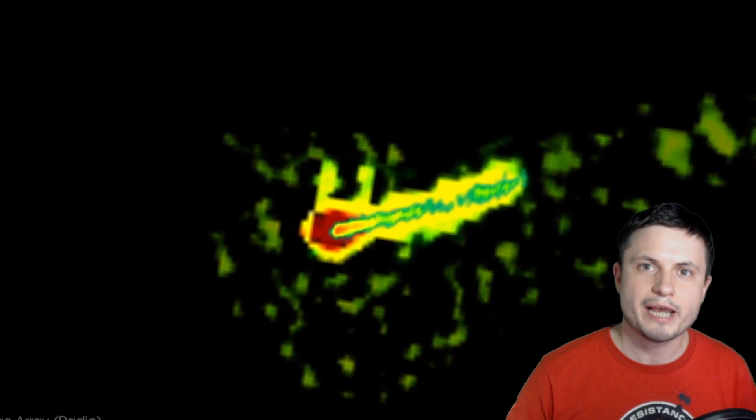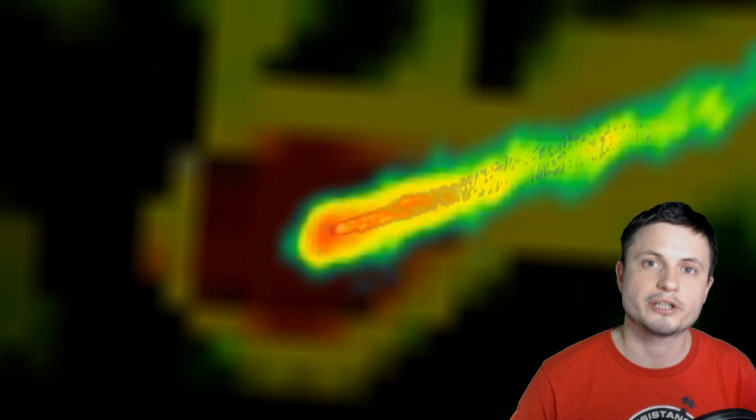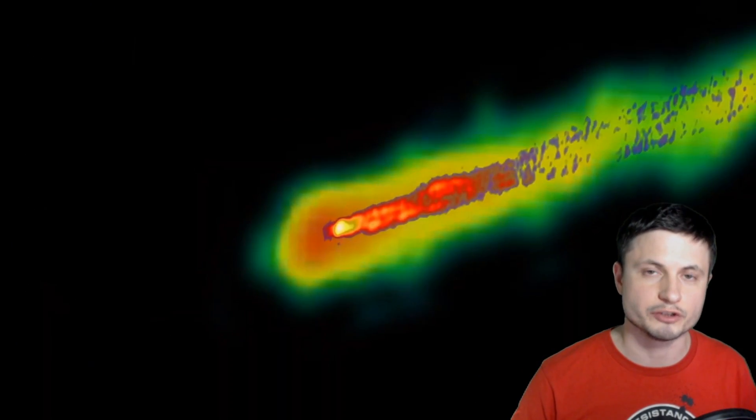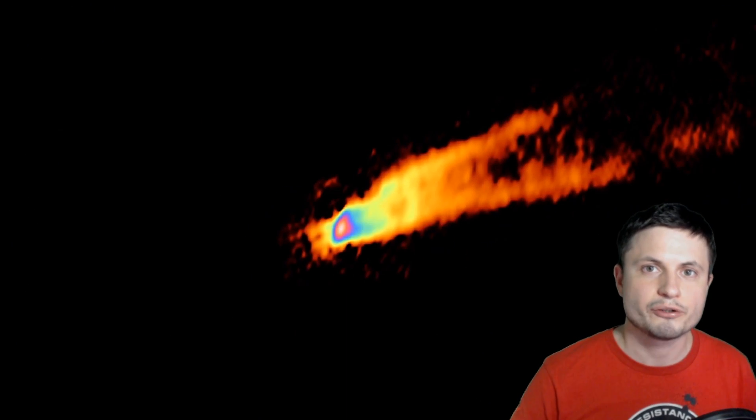And what they've discovered is that some of these jets were moving at about 2.3 times the speed of light, others were moving closer to about 6.3 times the speed of light. And once again, this is the appearance of motion, so this allowed the scientists to very accurately estimate the actual speed of the jet, and it's very close to about 99% of the speed of light.